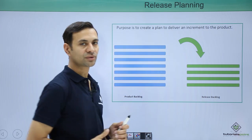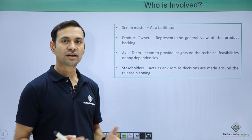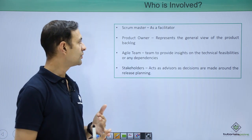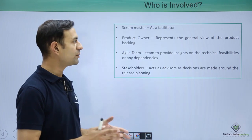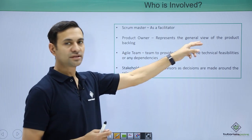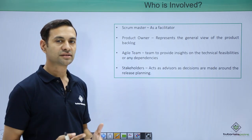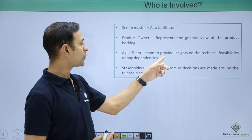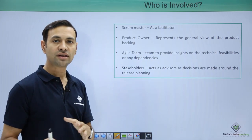This is the first step of release planning. Now let us see who is involved in a release plan. First is the Scrum Master as a facilitator, whose work is to facilitate release planning and to ensure everybody gives their input and knows the output. Second is the Product Owner, who represents the general view of the product backlog and acts as a client. Third is the Agile Team — the developers, testers, and team lead — who provide insight on technical feasibility of a particular feature and any dependencies.